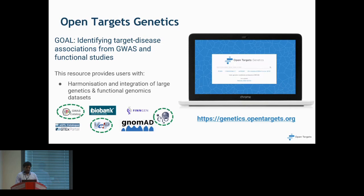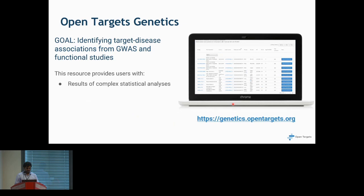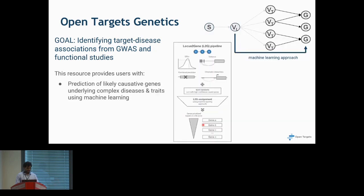This resource provides users with harmonization and integration of large genetics and functional genomics data from UK Biobank, FinnGen, and the GTEx portal. It analyzes this data and presents results of complex statistical analyses. It also provides prediction of likely causal genes underlying complex diseases and traits using a machine learning pipeline called locus-to-gene.